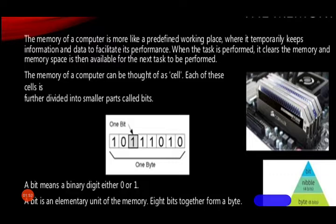What is memory made up of? What is the human body made up of? We have small, small cells. Similarly, computer memory also has parts called cells. And cells get further divided into bits — 0 and 1, as we already know.